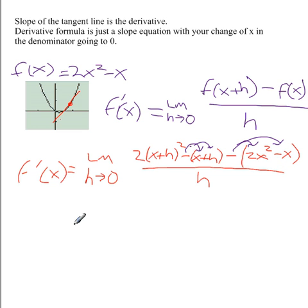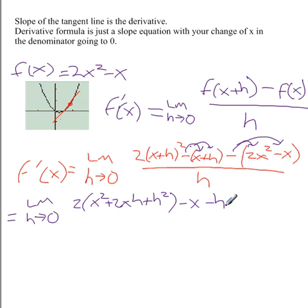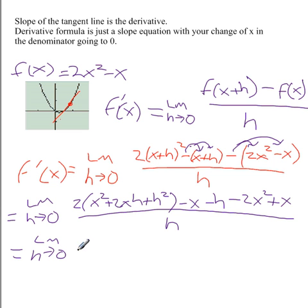The derivative is now equal to the limit as h goes to zero. Two times the square of x + h. So the square of x + h is x² + 2xh + h². Wait, I didn't distribute carefully. Let me try that again. 2x² + 4xh plus 2h².